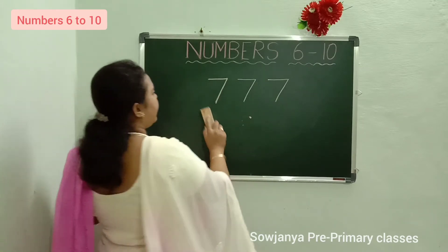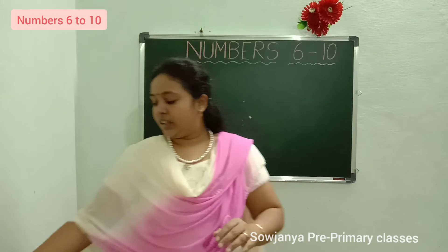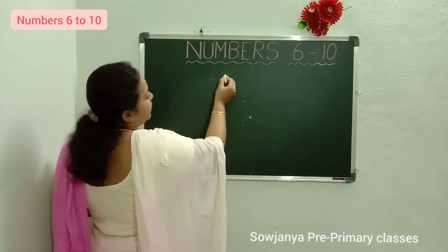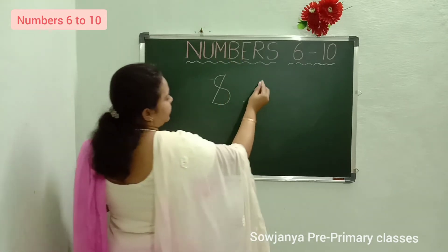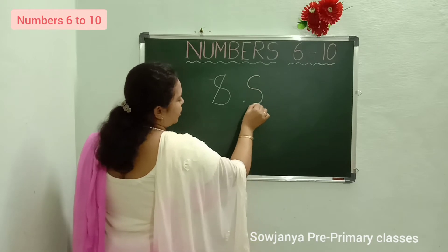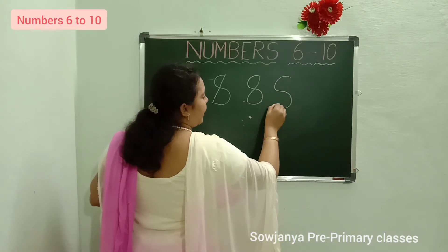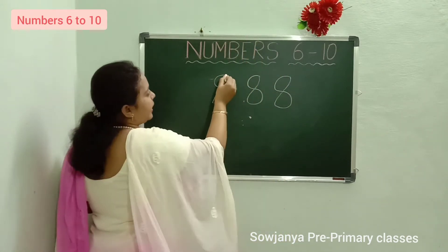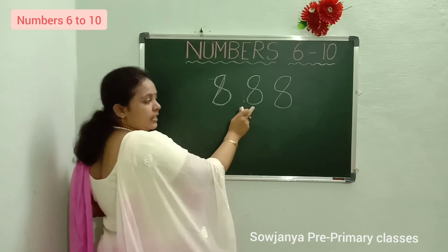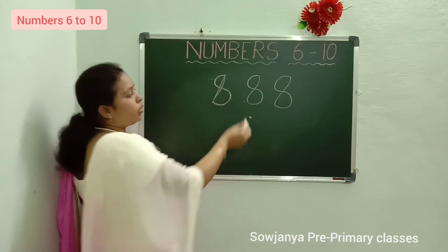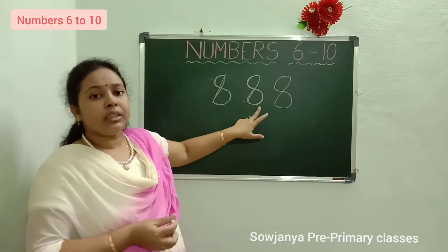7 after? 8. Now I will tell you how to write 8. See. First write a right curve, left curve, and a right slanting line. 8. Right curve, left curve, and a right slanting line. 8. What is this number? 8. How to write 8? Right curve, left curve, right slanting line. 8.